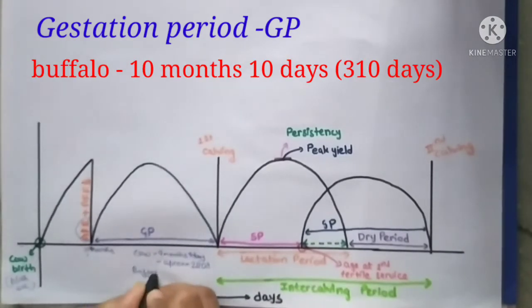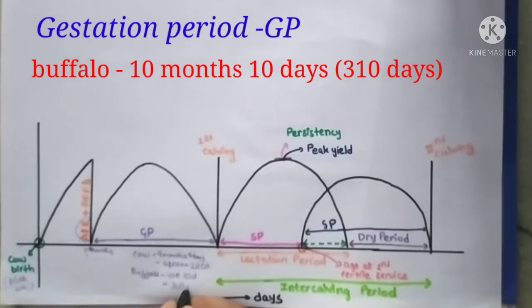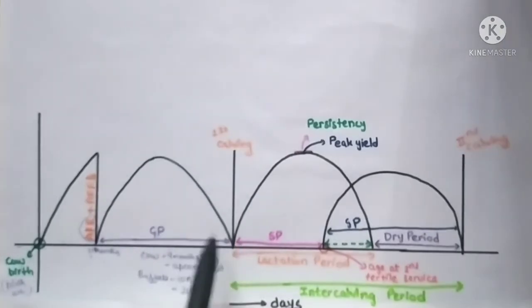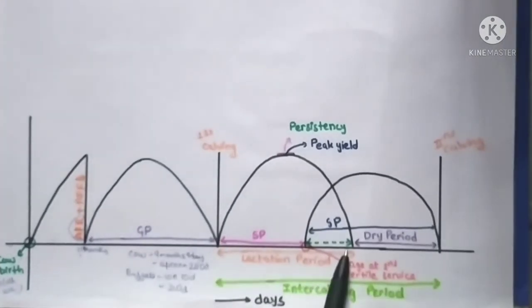In buffaloes, it's 10 months and 10 days, approximately 310 days. After the completion of the gestation period, first calving occurs, and then the lactation period starts.